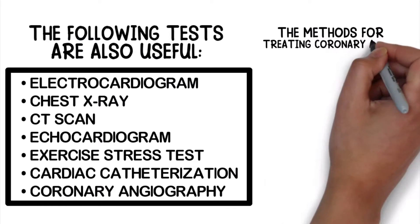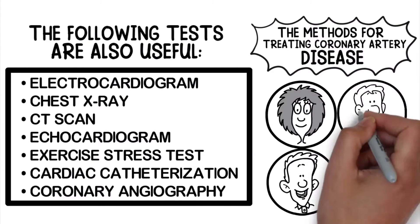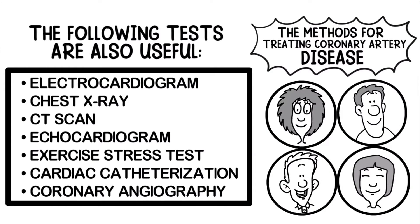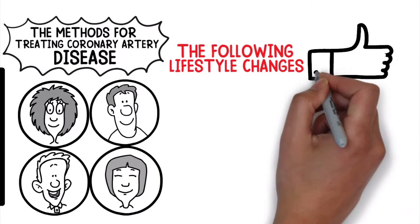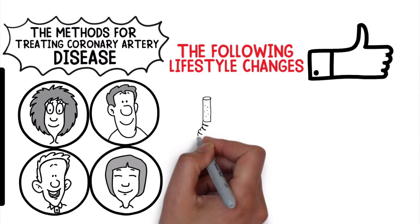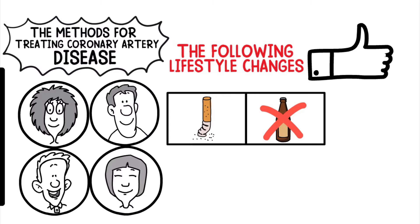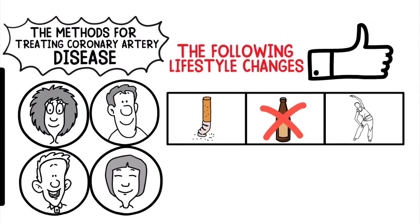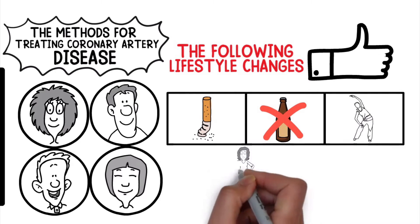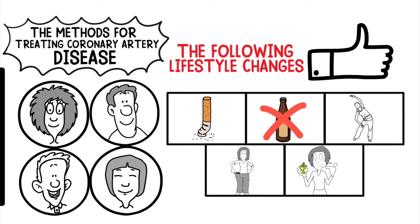The methods of treating coronary artery disease can be different from patient to patient, but in general the following lifestyle changes are recommended: quit smoking tobacco, stop or reduce alcohol consumption, participate in regular exercise and physical activity, keep your body weight at a healthy level, and eat a healthy diet that is low in fat and sodium.